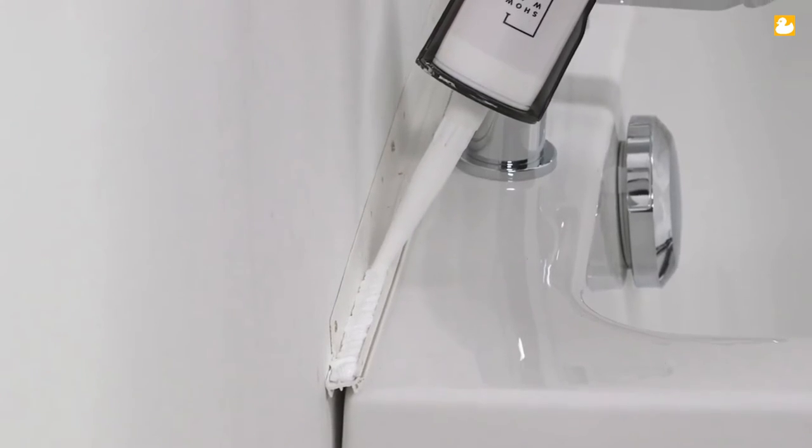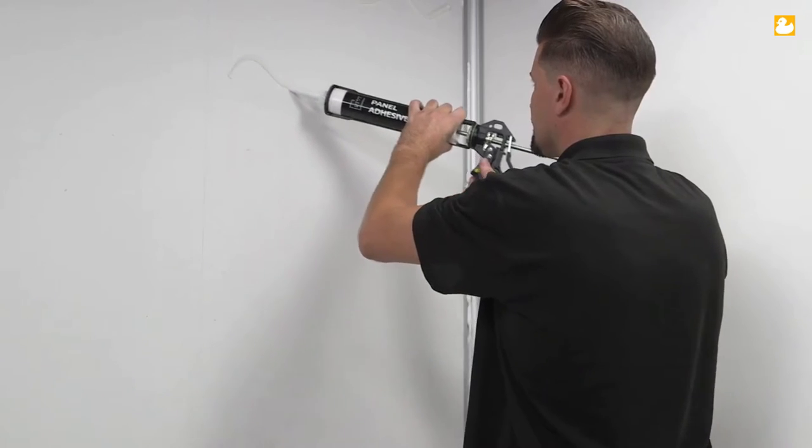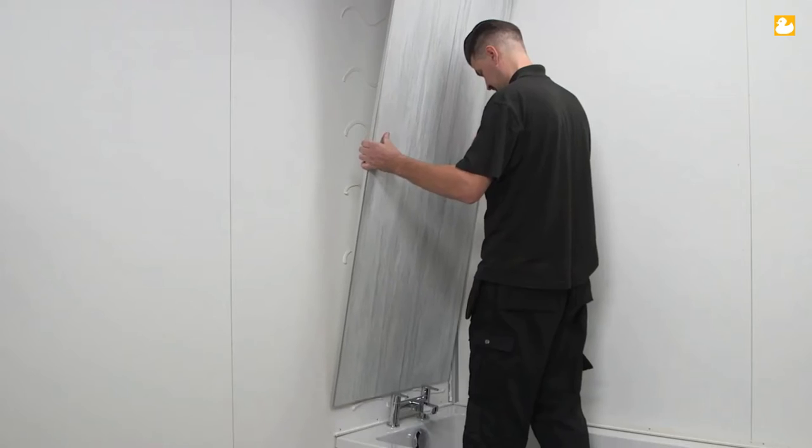Now apply sealant to the shore seal strip and corner trim, and apply 6mm beads of adhesive to the walls in snake-like lines. To fix panel 1, ensure the bottom edge is sitting on the sealant, and then locate the panel into the corner trim.